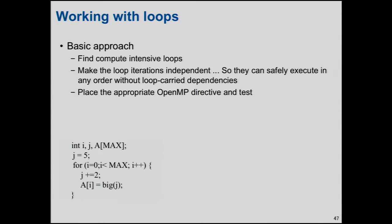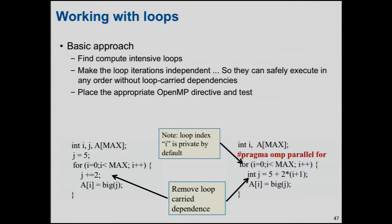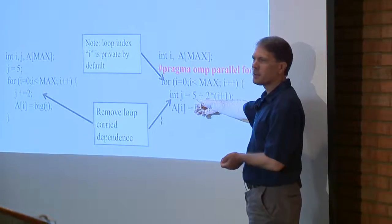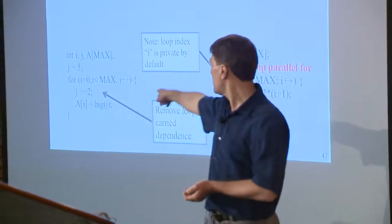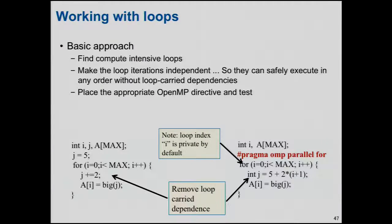Here's a very simple example: this loop uses J and its value depends on which iteration you're in. So you turn it into something that figures out what J is from I rather than sequentially. It's a lot easier to write J plus equals two, but the expression in terms of I is equivalent — otherwise you'd have to do the updates to J in sequential order.